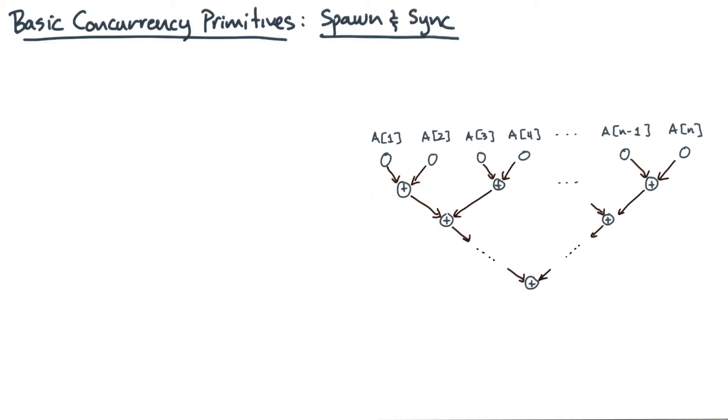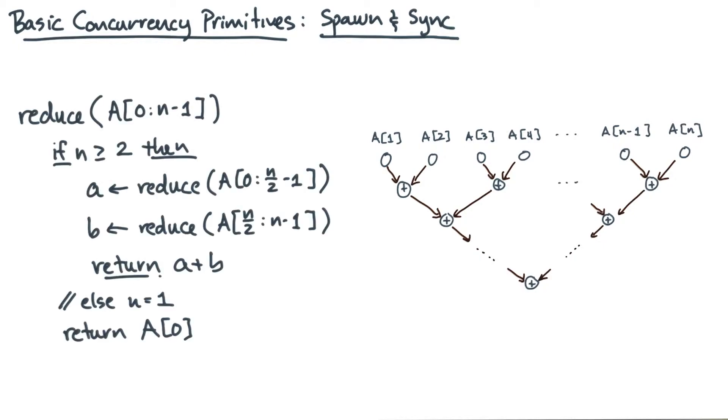Here's the DAG for a divide and conquer algorithm to compute a reduction. You've argued that it's work optimal and it has logarithmic span. Now, I want to give you an algorithm that produces this DAG. Let's start with just a sequential algorithm that implements the divide and conquer scheme.